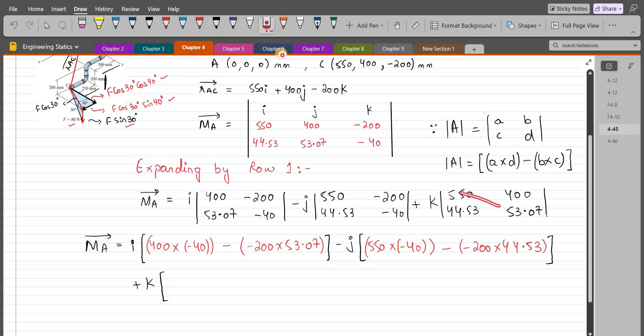Again a d minus b c. So we have 550 into 53.07 minus 400 into 44.53.